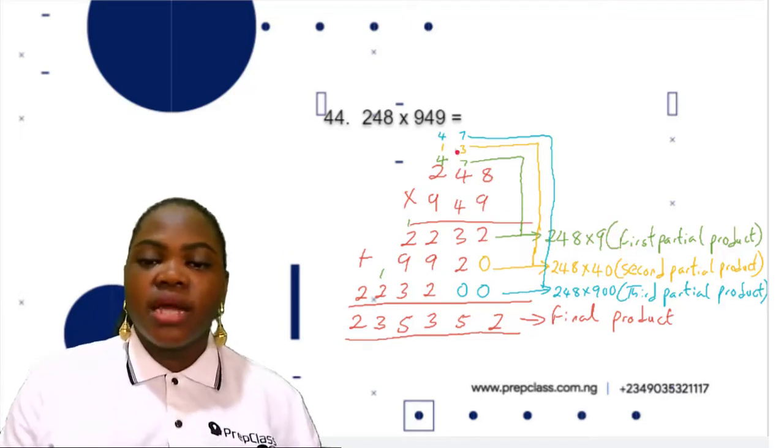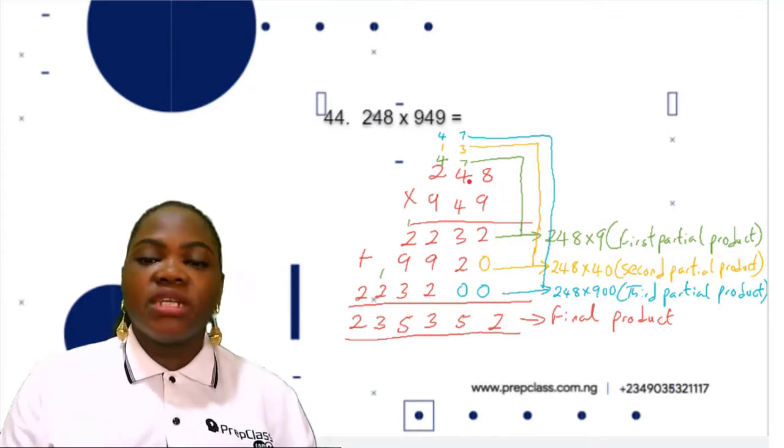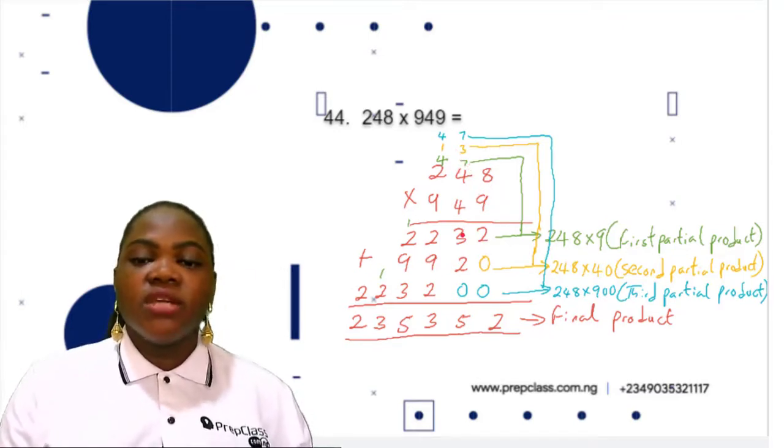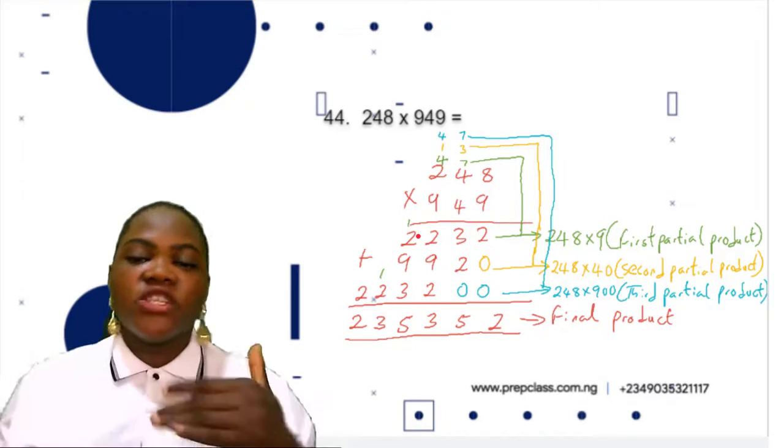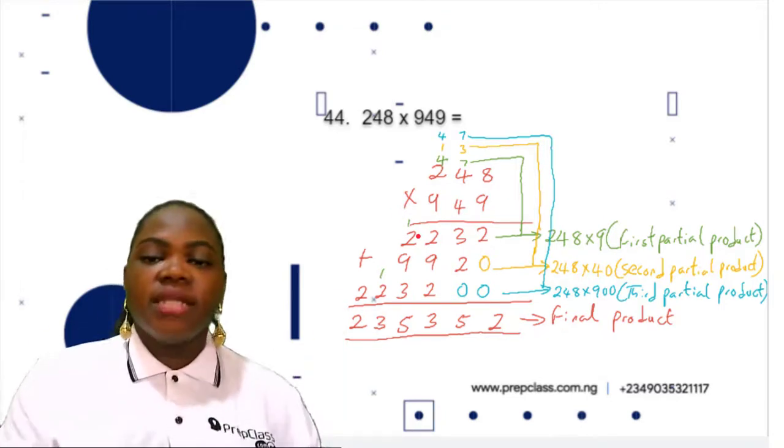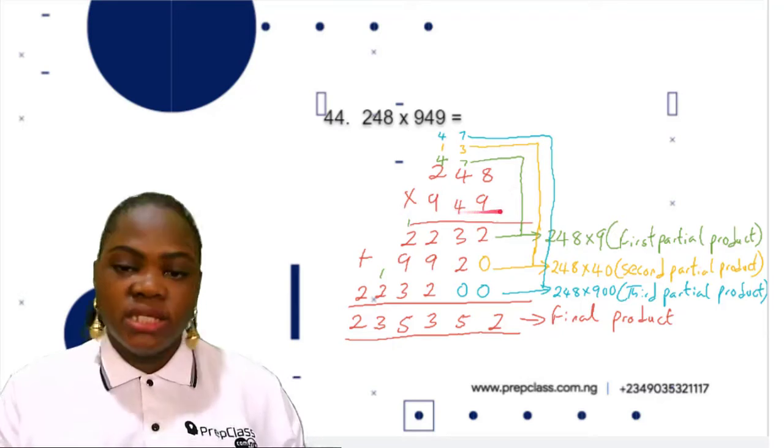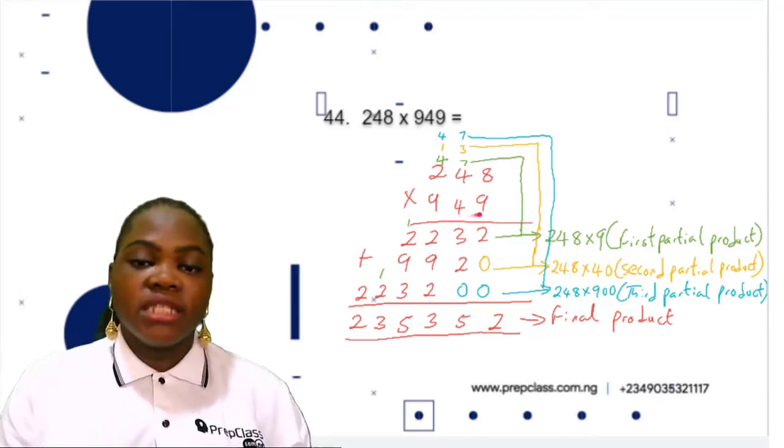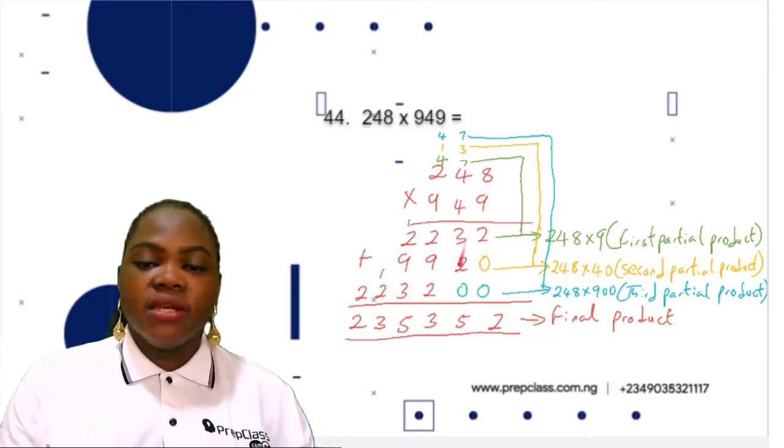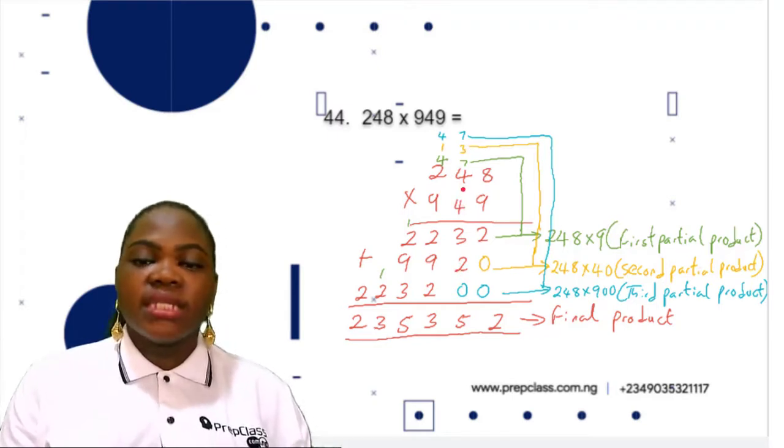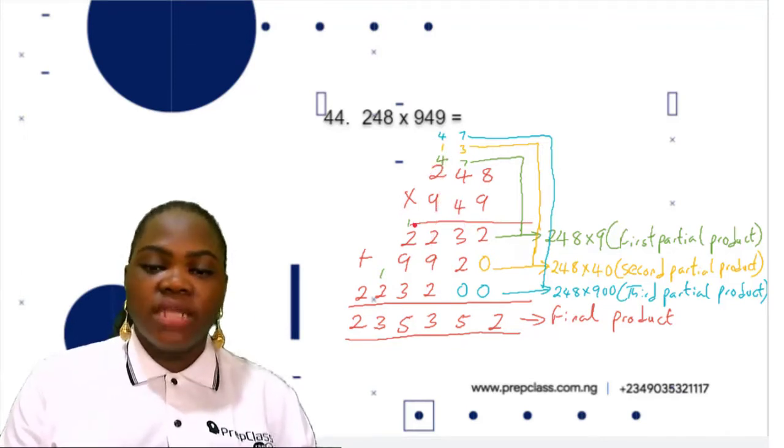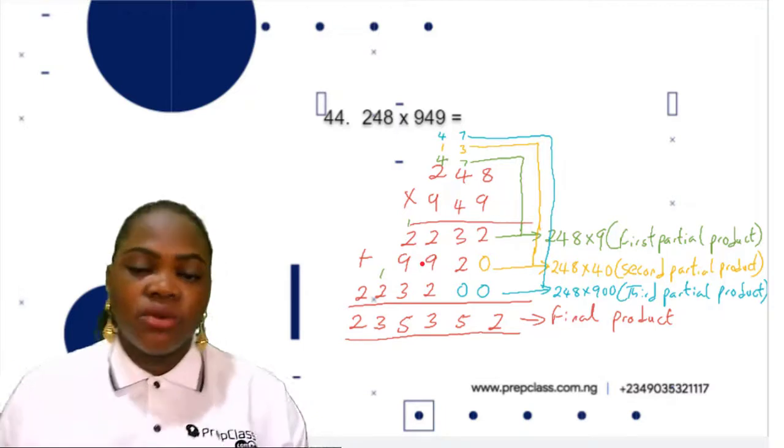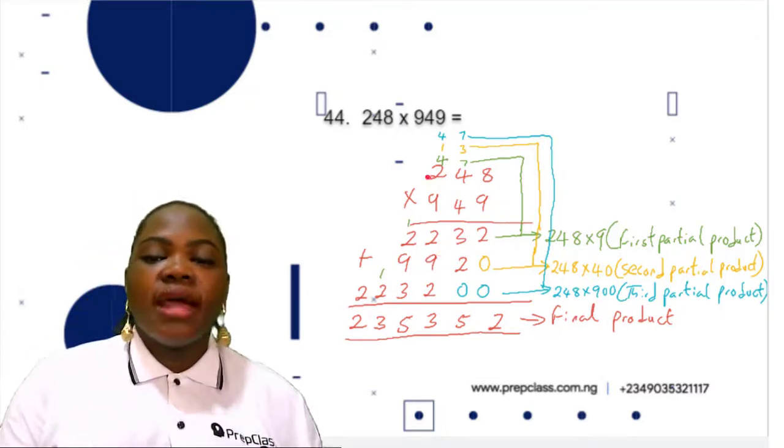Then we multiply 248 by 40. Let's start: 4 times 8 is 32, write 2 carry 3. 4 times 4 is 16, 16 plus 3 is 19, write 9 carry 1. 4 times 2 is 8, 8 plus 1 is 9. The second partial product is 9920.